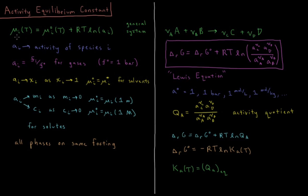For ideal gases, the chemical potential is equal to the chemical potential at the standard pressure of one bar, plus RT times the natural log of the pressure divided by the standard pressure of one bar. For real gases, we took this equation where we replaced pressure with the analog of pressure for real gases, which is fugacities. So this quantity was f_i divided by f-standard, or one bar as well.